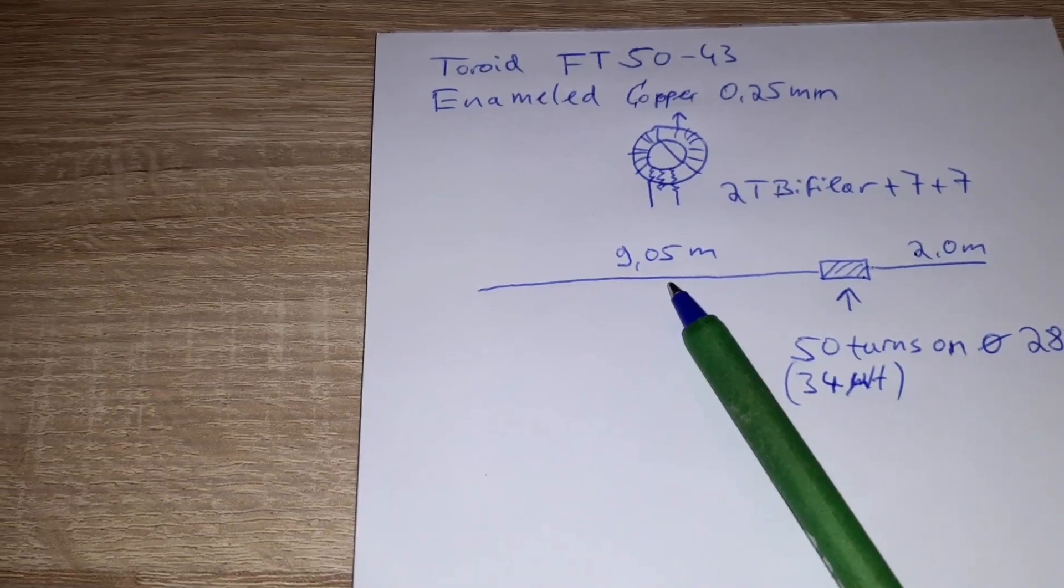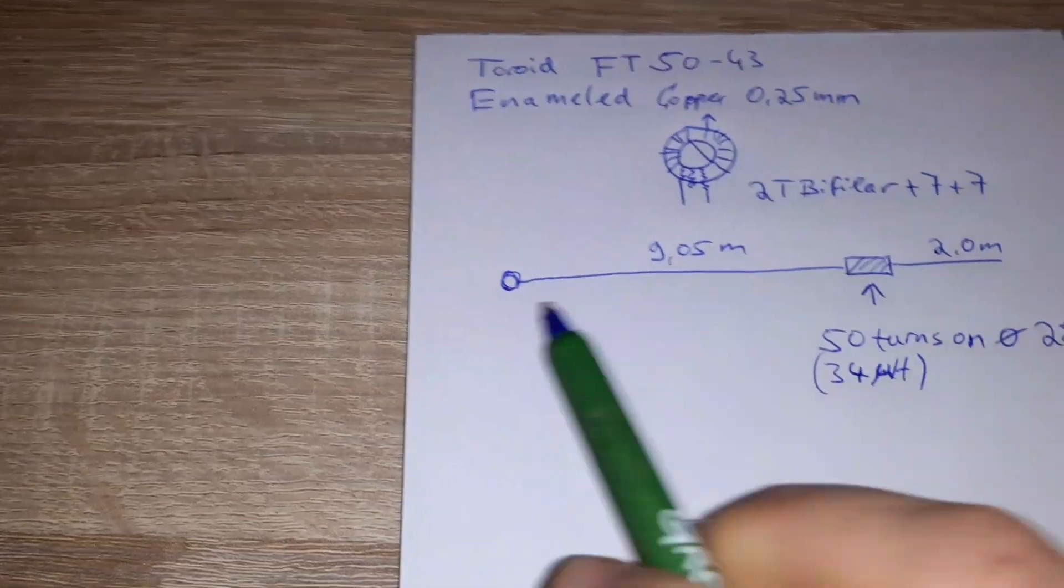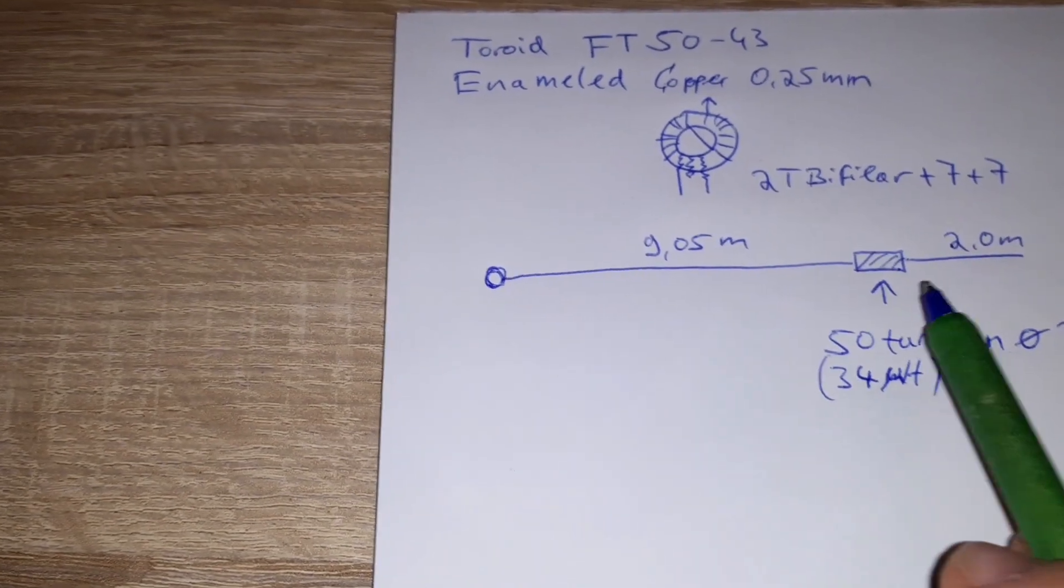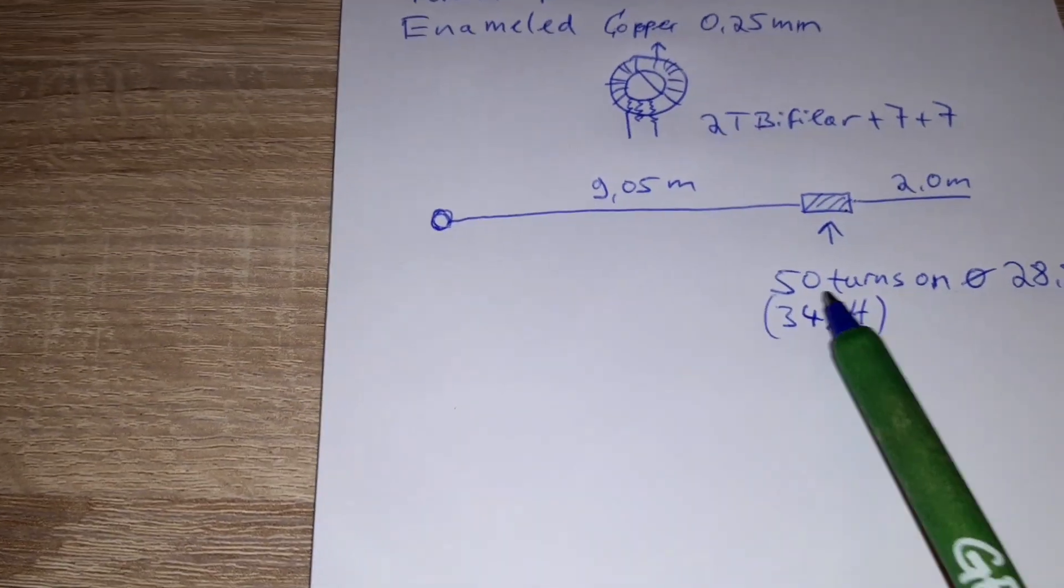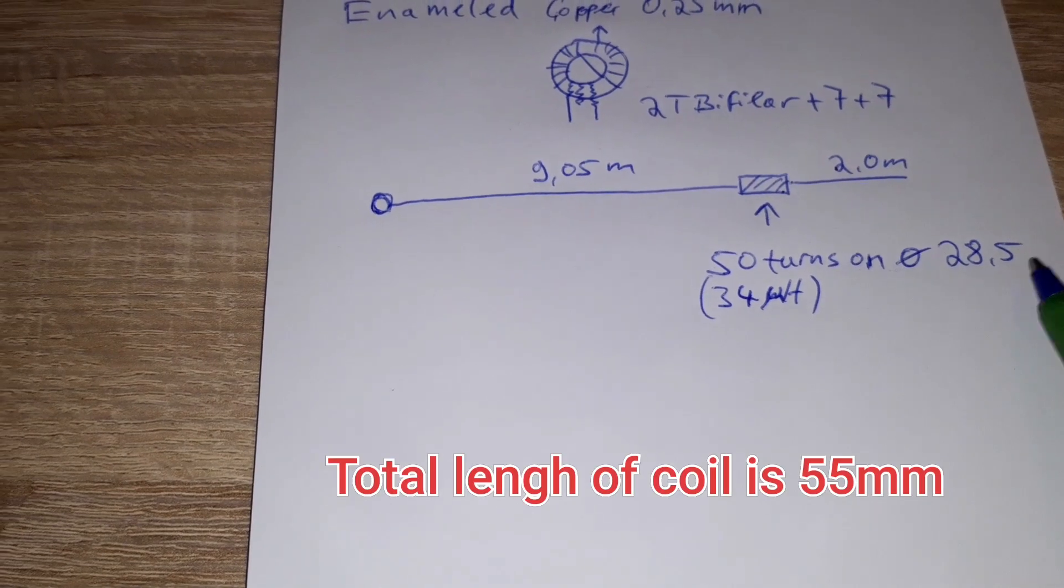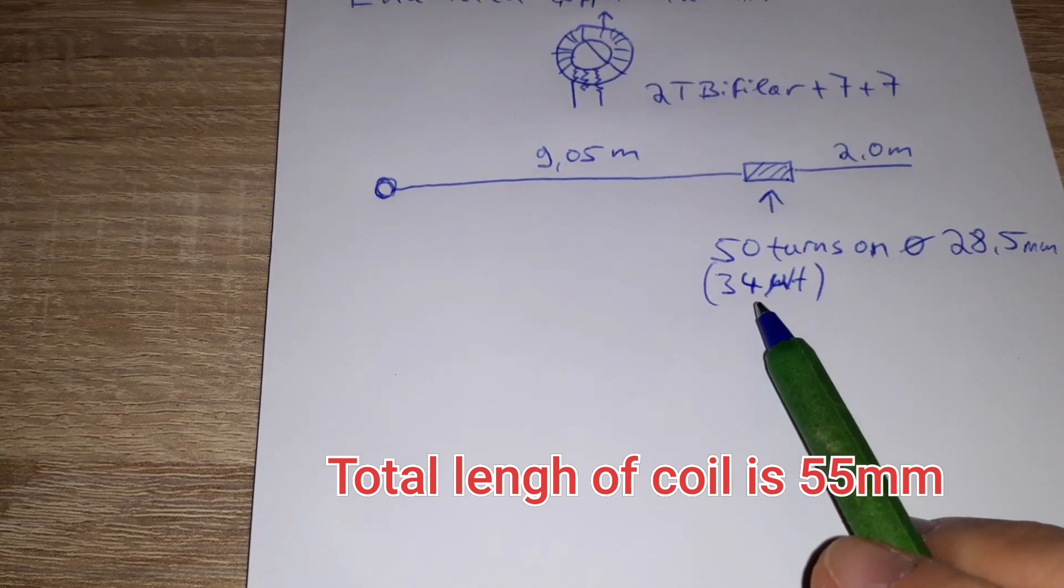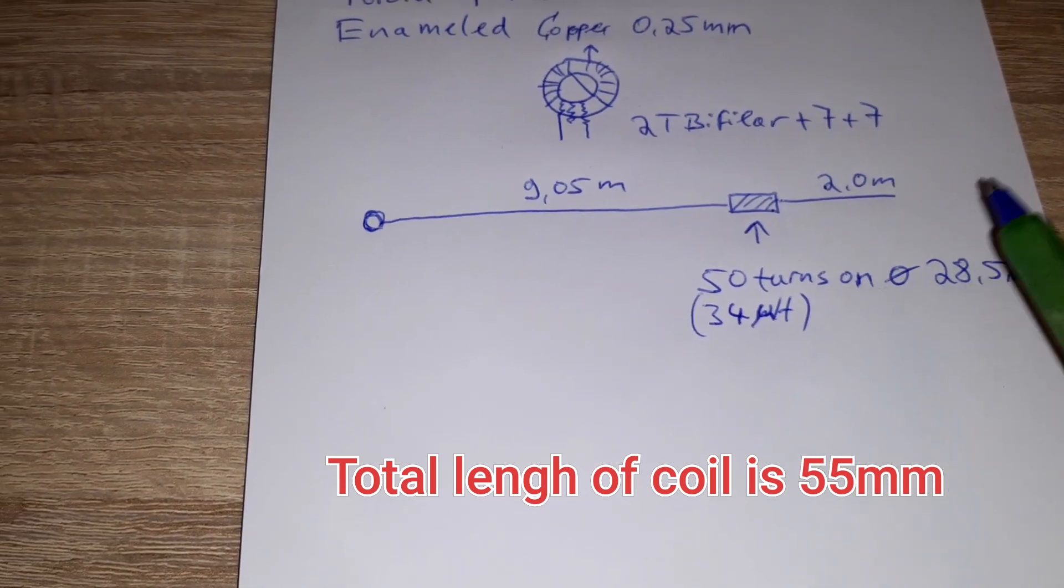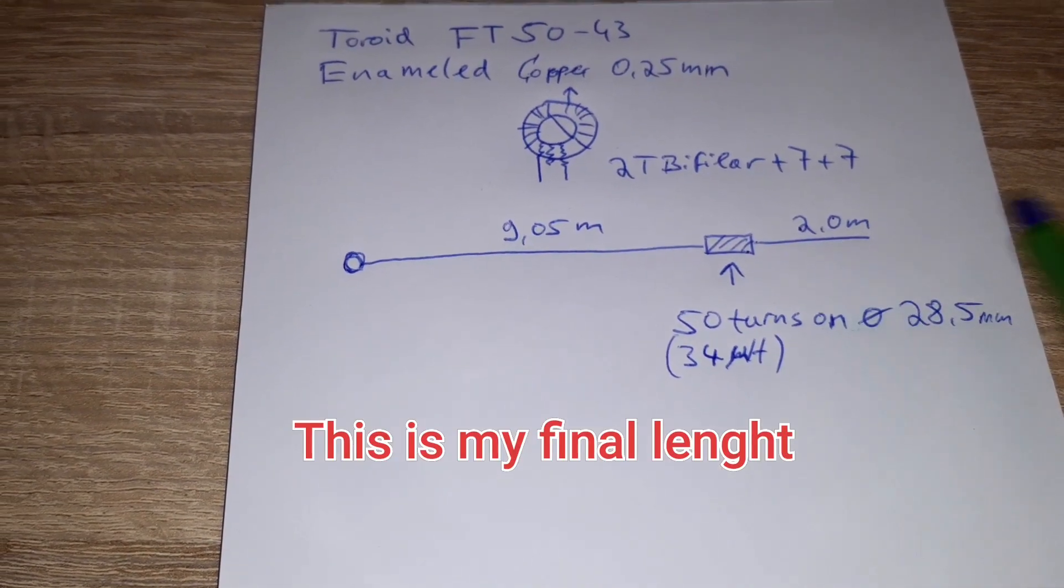Then the first wire, here is the toroid. The first wire is 9.05 meters. Then came the inductor, which is 50 turns on 28.5 mm PVC pipe, which is 34 microhenry. I have measured that. And after that, you need to add two meters of wire again. That's it.